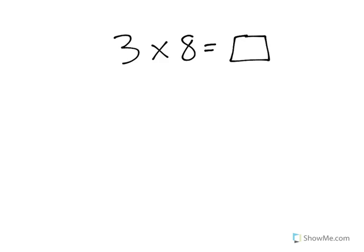The math problem says 3 times 8 equals blank. Now we know that multiplication means this problem would mean 3 groups of 8 in each group equals blank.